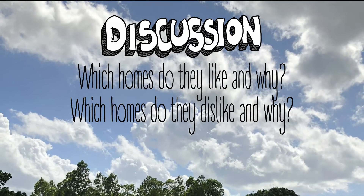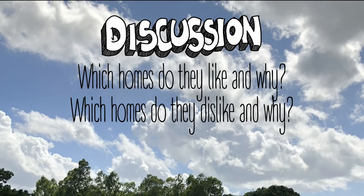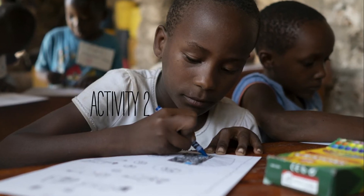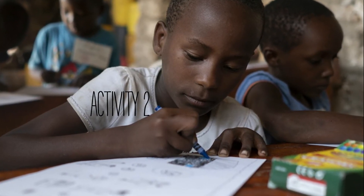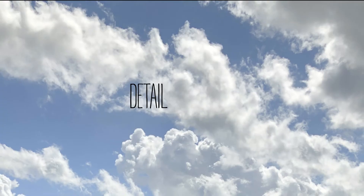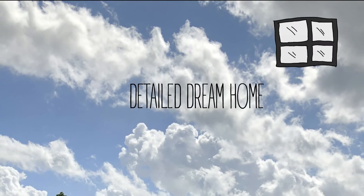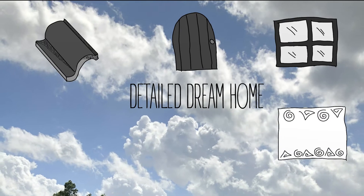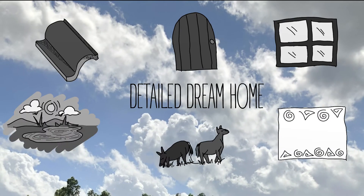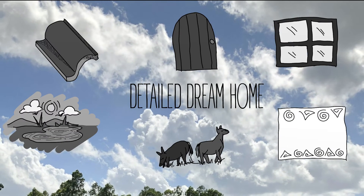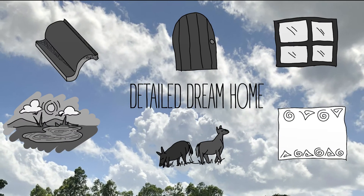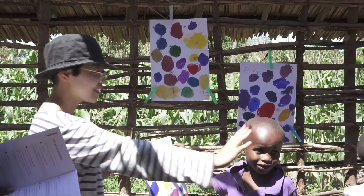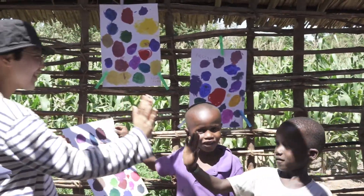We can then have a 10-minute break before embarking on Activity 2. In this exercise, the students shall draw their dream home in detail — windows, doors, roofing, wall patterns, animals, surroundings, etc. This shall allow us to establish the kind of home the children hope to see themselves living in in the future.